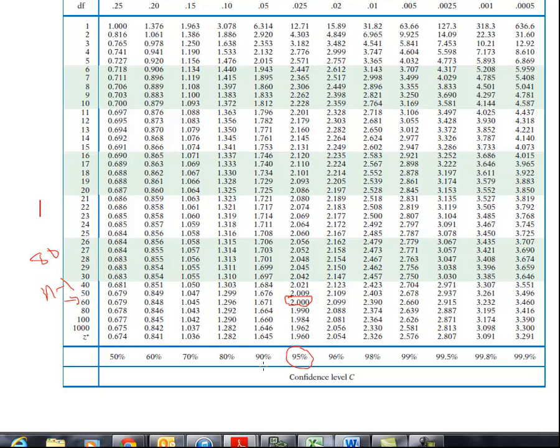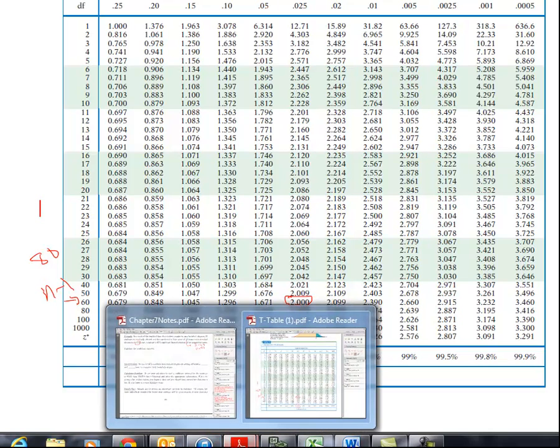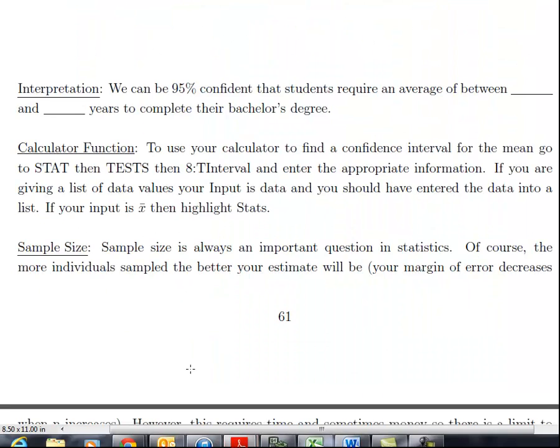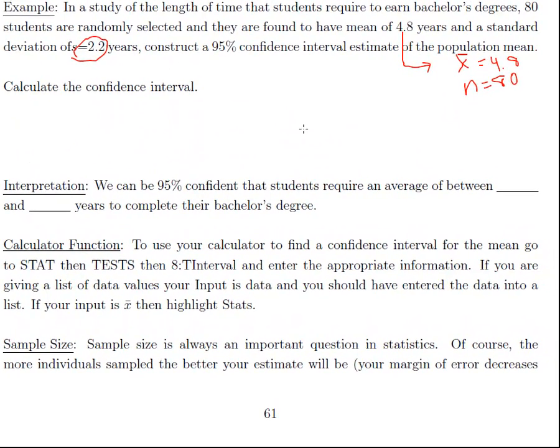We would round down to 60 because that's the closest rounding down, and we would use 2.00 for our critical value. You go to your table and you just simply round down to the nearest row, or we can do this on the calculator or I'm also going to show you how to do it on StatCrunch.